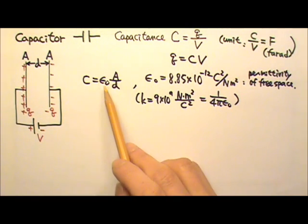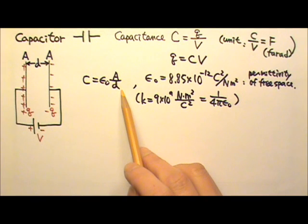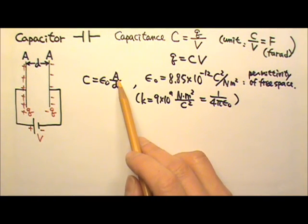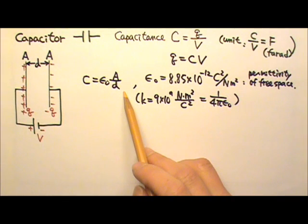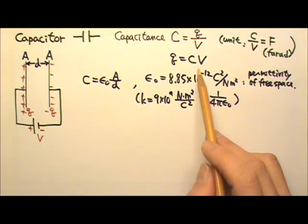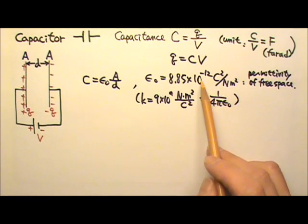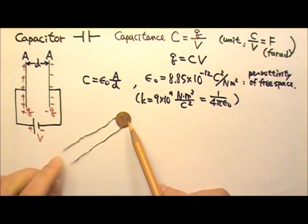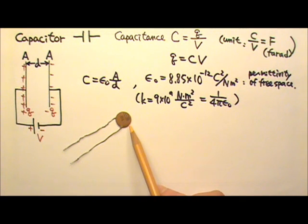Because C equals epsilon naught A over d, to make a large capacitor, we need to make the plates big and the plate separation small. And because epsilon naught is such a small number, capacitance is usually a small number. For example, this disc shaped ceramic capacitor is 0.01 microfarad.